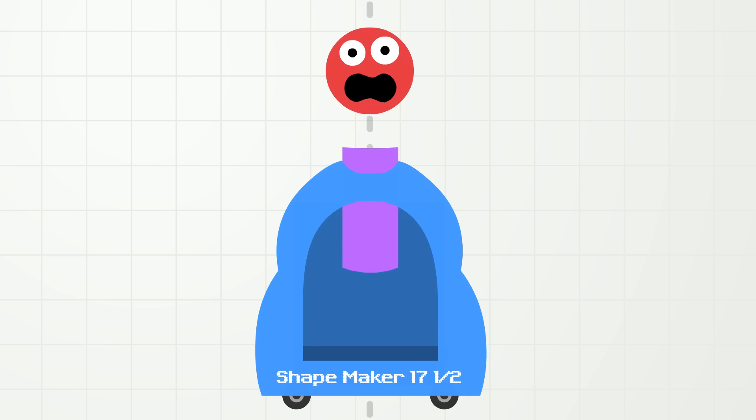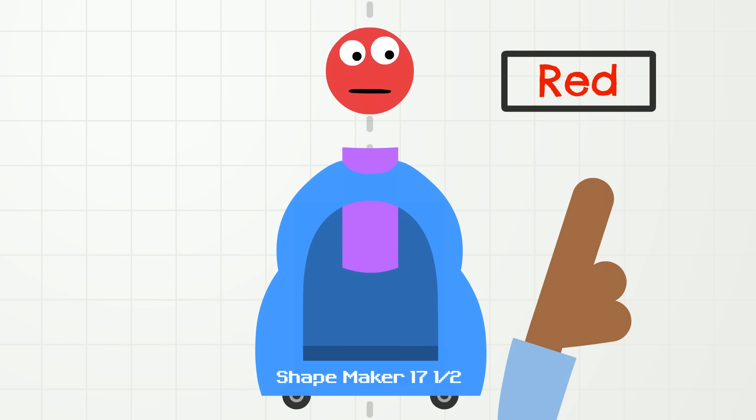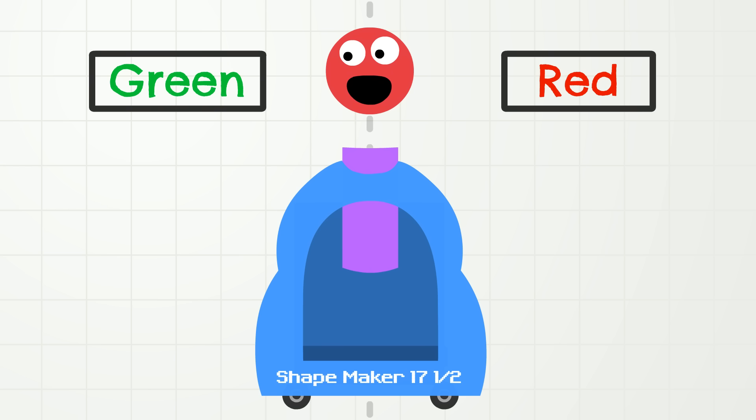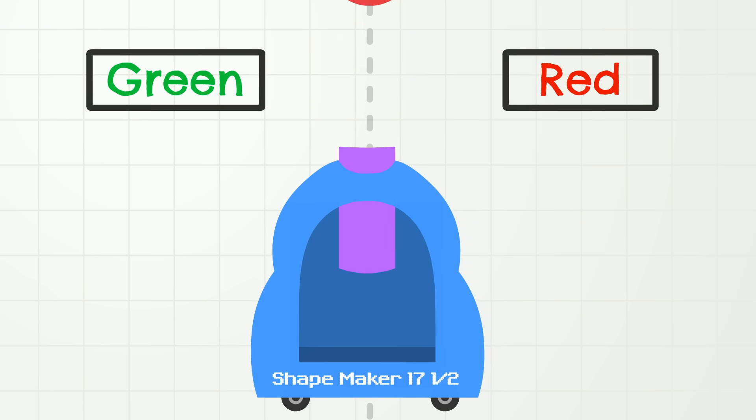The first attribute is color! If the shape is red, it should go on the right side, so you can point to the right side like this. If the shape is green, it should go to the left side, so you can point to the left side like this. Okay, ShapeMaker 17 and 1 half, start!